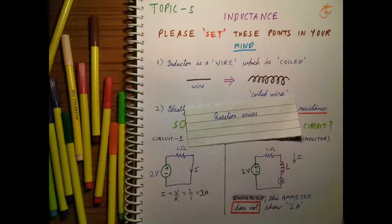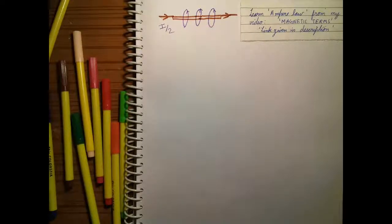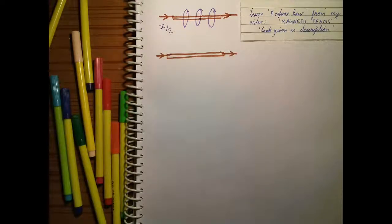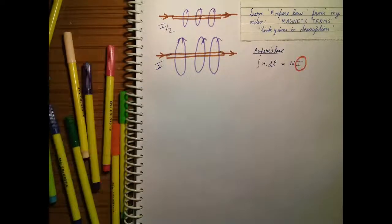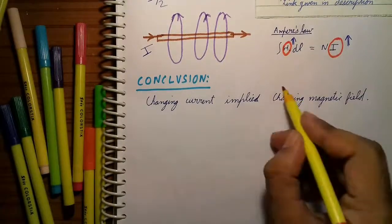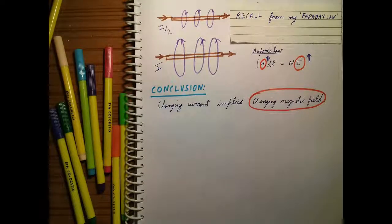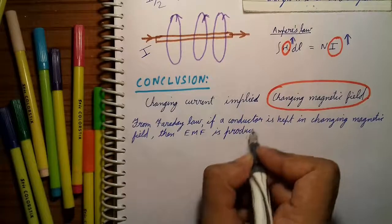How does the inductor do this? From Ampere's law, a current-carrying wire has some magnetic field intensity H produced around it as shown in the figure. If a current I flows, some magnetic field intensity is produced, which is larger than when only I/2 current flows. So as we increase I, H also increases. Conclusion: changing current implies changing magnetic field.